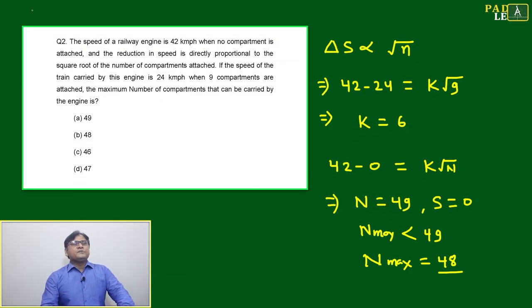Now we'll come to question number two. This is a good question - today it is a CAT question, a previous year CAT paper. The speed of a railway engine is 42 kilometers per hour when no compartment is attached.